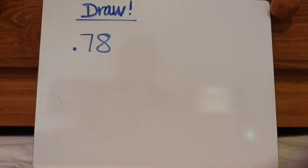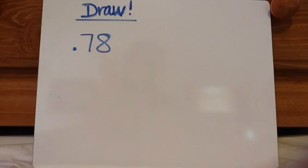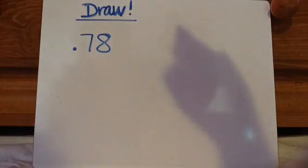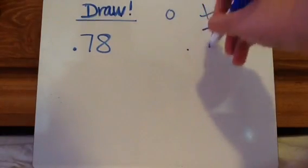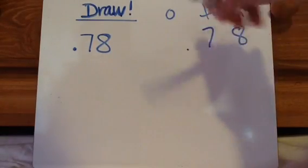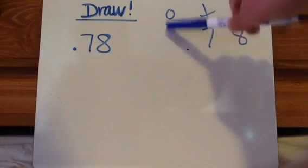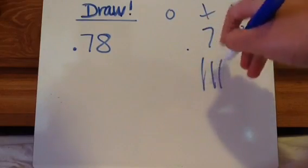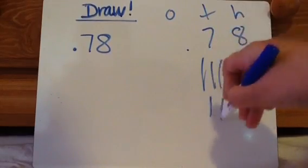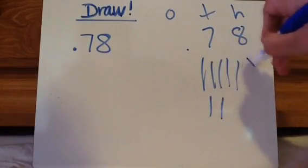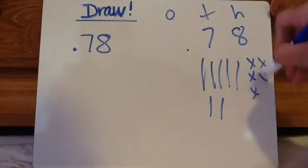0.78: press pause, draw, then press play when you're ready to check. So in this one, I can already tell there's no ones, so just 7 tenths and then 8 hundredths.